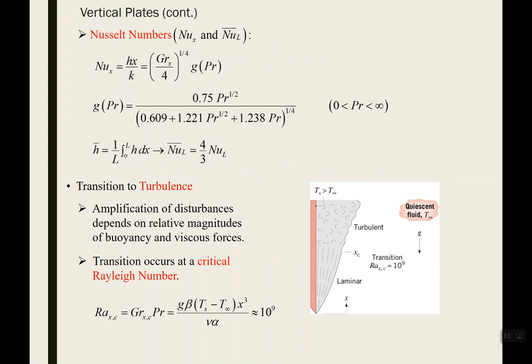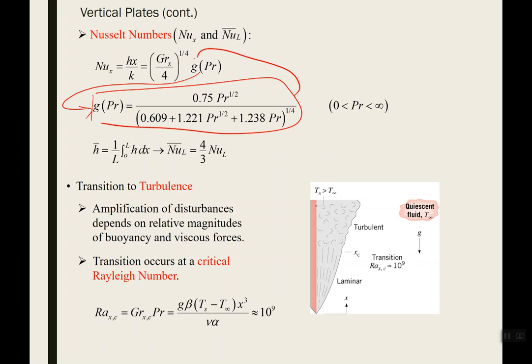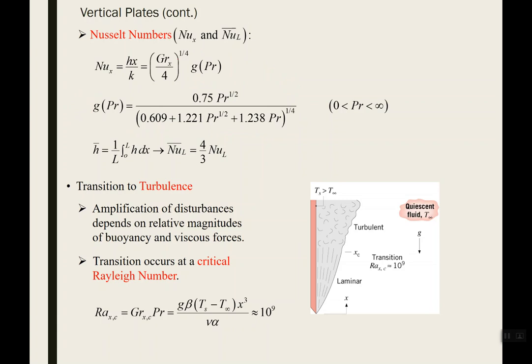Just like forced convection, you need to analyze your system geometry and fluid properties. We'll use the Grashof number and Rayleigh number instead of the Reynolds number, but the procedure is basically the same — a Nusselt number correlation as a function of temperature gradients, then solve for H. For a vertical plate, the correlation involves the Grashof number over four to the one-fourth power, multiplied by a function G defined in the textbook. That gives the Nusselt number for vertical plate natural convection.